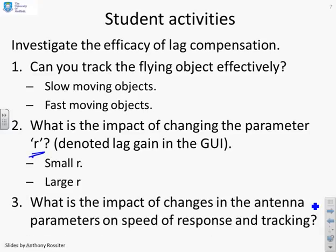What's the impact of changes in the antenna parameters on the speed of response and tracking? So you have these antenna parameters c and t. If you change those, how does it affect the behavior?